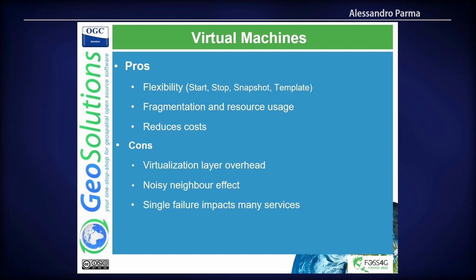Virtual machines, instead, give you more flexibility. You can start and stop the machine easily, snapshot them, template them — so you don't have to reinstall everything from scratch every time. You have less fragmentation of resources and reduced costs. However, there's a virtualization layer overhead you have to pay for. There's also the noisy neighbor effect — other virtual machines can take over and use more resources than planned, like CPU or IOPS. And it's also a single point of failure for many services, because if the machine breaks, all the services go down.